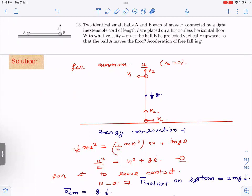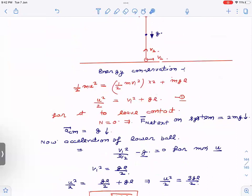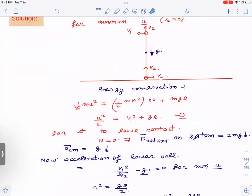Now, again, for this to leave contact, if it is leaving contact, then there is no normal here. If there is no normal, then external force on this system is only gravity, which is 2Mg, because mass is M for both the balls. So acceleration of center of mass is g downward.